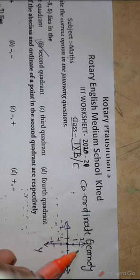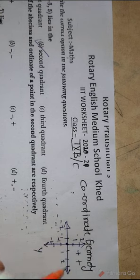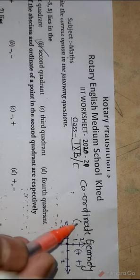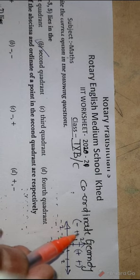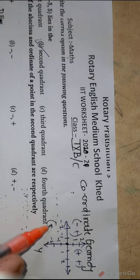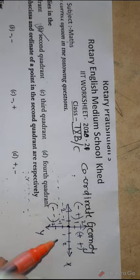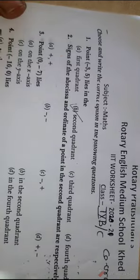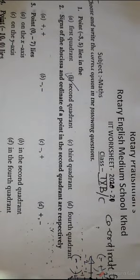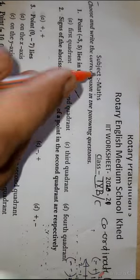So here it is plus-plus, meaning x-axis plus and y-axis also plus. This side on x-axis minus and y-axis plus. Here both are negative — minus-minus — and here plus-minus. So here minus-plus: this is the first quadrant, this is the second, this is the third, and fourth. So the answer is the second quadrant.